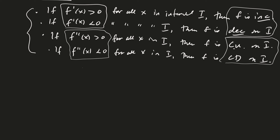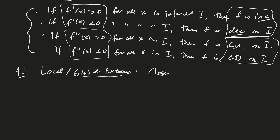Now we're going to continue our discussion. As a reminder, in section 4.1 we covered local and global maxima and minima — global extrema. We didn't really look for local extrema; we're going to do that in this section. We only looked at global extrema on a closed interval, using the closed interval method.